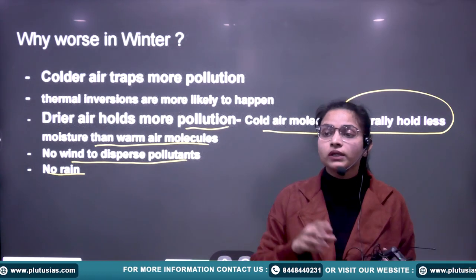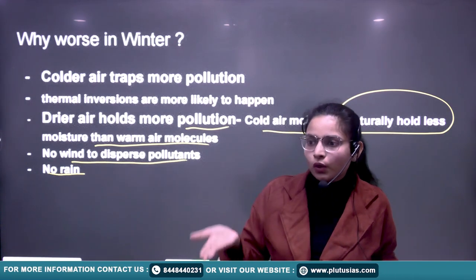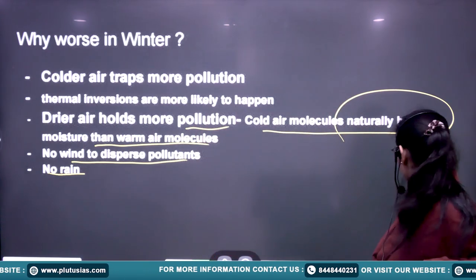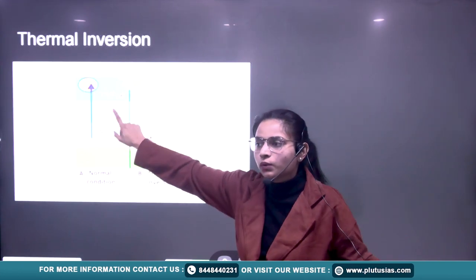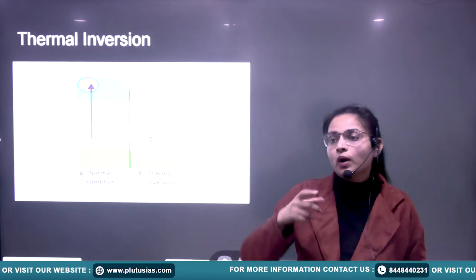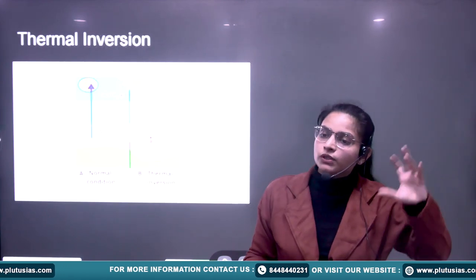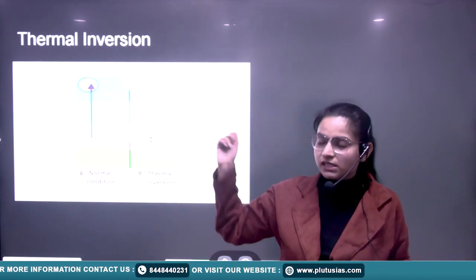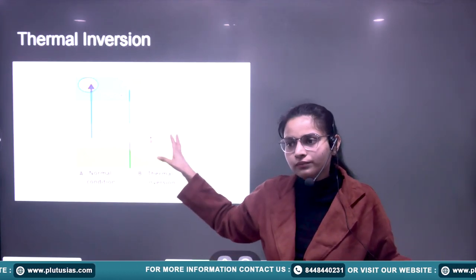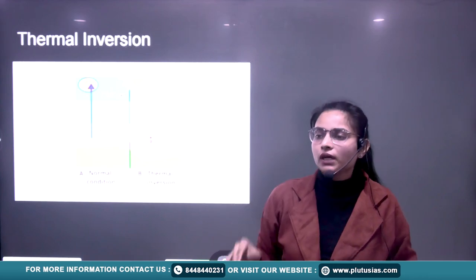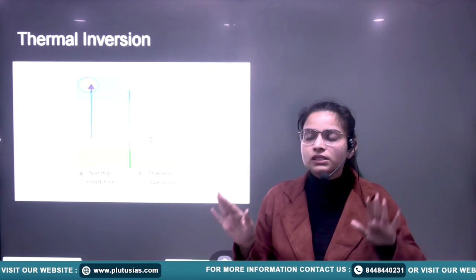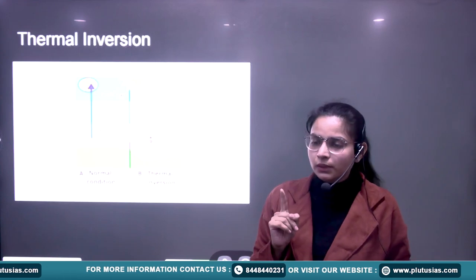Why is pollution worse in winter? Cold air traps more pollution. Thermal inversion is the opposite of normal conditions — normally temperature decreases as we go up, but in thermal inversion, above cold air there is warm air. This traps pollutants near the surface. Your homework: prepare the topic thermal inversion — causes and impacts — for GS1 geography.